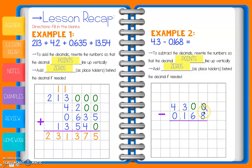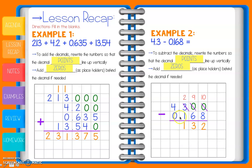Now we subtract our columns. Zero minus 8 — we can't do that, so we regroup and make this zero a 10. I can't just take from the zero next to it, so I scoot over and look at it as 30 — take one from 30, making it 29, and this becomes 10. Now: 10 − 8 = 2, 9 − 6 = 3, 2 − 1 = 1. We drop our decimal point straight down. 4 − 0 = 4. Our final answer is 4.132.